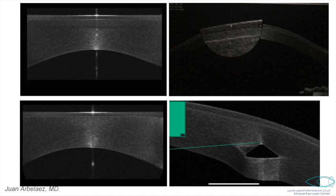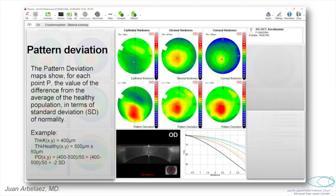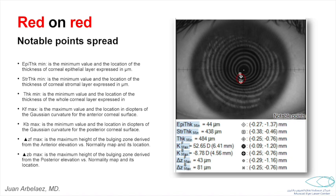The pattern deviation maps are very useful in cases of subclinical or early keratoconus because they help us identify what is abnormal. For example, in this patient these pachymetric maps look quite abnormal, but when we compare to what the normal population should have, we see more evident thinning of the cornea and the localized point of weakness. The red-on-red points are the important points the device uses to identify if there is ectasia or any kind of weakness in the cornea, focusing all the maps mentioned before.